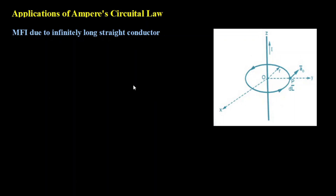One more thing to remember here is that the direction of magnetic field intensity is assumed to be tangential to the closed path. The a-phi cap gives the direction of H vector. At any instant I measure magnetic field intensity on the closed path, the direction is circular. So I consider the direction of magnetic field around the conductor to be a-phi cap — the magnetic field intensity is tangential to the closed path.